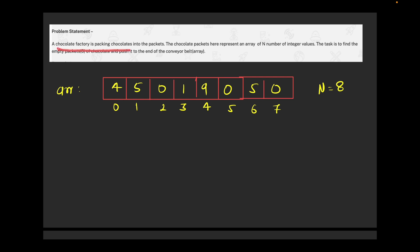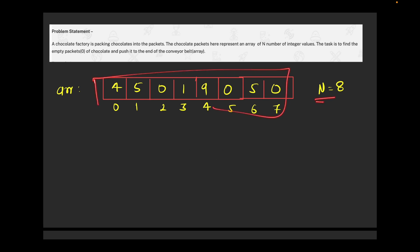The first question says that a chocolate factory is packing chocolates into packets. These chocolates are represented as an array of n integers, and the task is to find the empty packets which contain zero chocolates and push them to the end of the array. Most students get confused because the problem is given in story format, but the question is very easy — they're just trying to confuse us with the story.